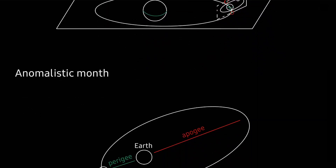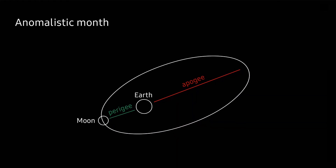The third orbital period is called the anomalistic month — the duration between each consecutive perigee. The perigee is the smallest distance between the Earth and the Moon. The orbit of the Moon around the Earth is not a perfect circle but an ellipse, with the Earth at one focus. The perigee is when the Moon is closest, and the apogee is when it is farthest. This is what makes the difference between a total solar eclipse and an annular solar eclipse.